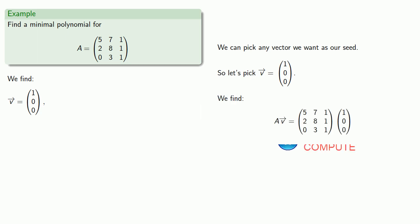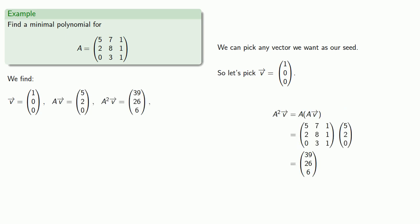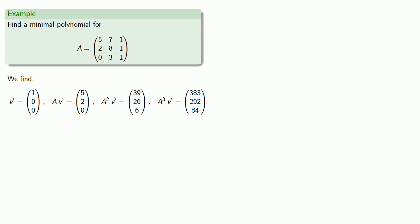So we find AV, A squared V, A cubed V. And letting these be column vectors and row reducing.